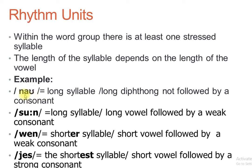There is one more factor: whether this vowel or diphthong within the syllable is followed by a consonant or not. If a consonant follows, it will reduce the length of the syllable. So 'now' is called a long syllable because it has a long diphthong and it is not followed by a consonant — the door is open, there is nothing to stop or shorten the length.